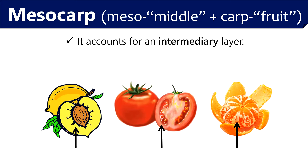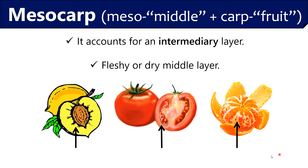Mesocarp is the middle or intermediary layer of the pericarp that exists between the exocarp and endocarp. This layer can be dry or fleshy, and the mesocarp of fruits like mango, tomato, peach, etc. makes up the edible portion. In this diagram, the arrows illustrate the mesocarp layer. The yellow middle portion of a peach indicates the mesocarp layer. The white portion of tomato also represents the mesocarp layer. In citrus fruit like orange, this white mesocarp layer is particularly called albedo or pith, that needs to be separated prior to eating.